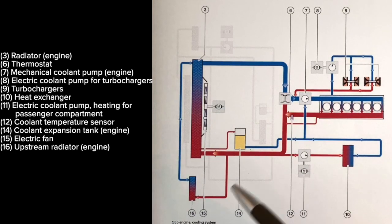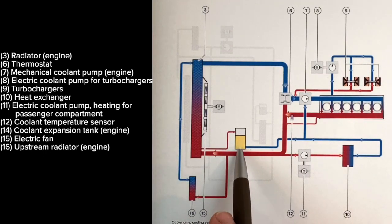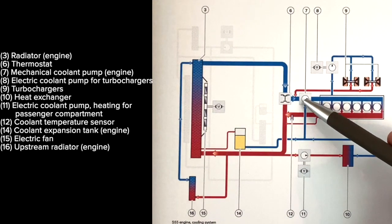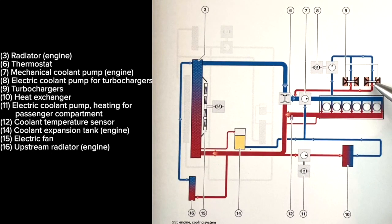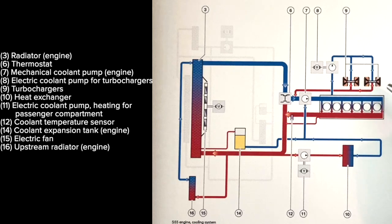To break down this engine cooling system, you have your main radiator and an upstream radiator which works in conjunction to help cool off your coolant. This engine uses a mechanical coolant pump, which is belt driven. When you turn the car off, it is no longer running.